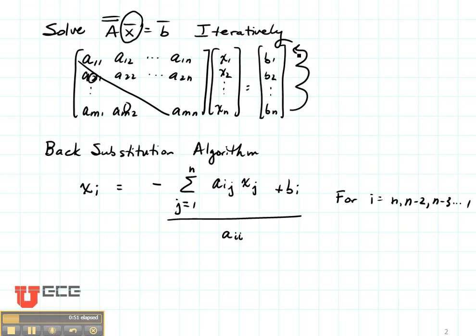Well that is a form of iteration, and in fact we could use this to develop an iterative method. Imagine what we could do if we did not have an upper diagonal matrix and if we had not yet discovered the values of X's. We could guess them.